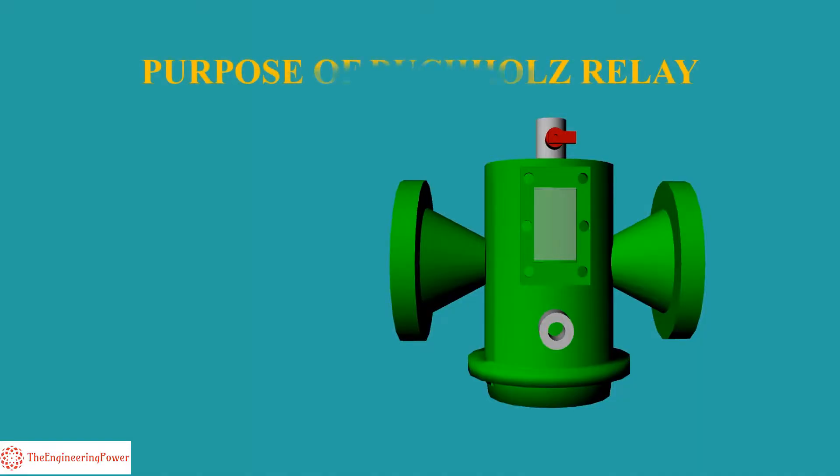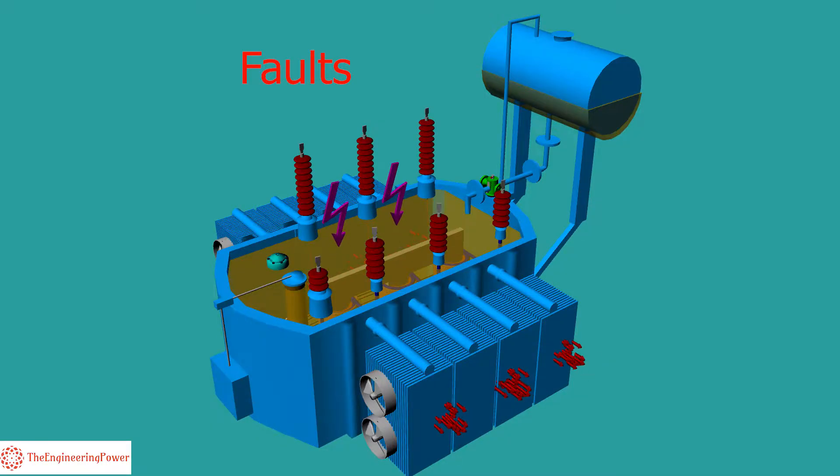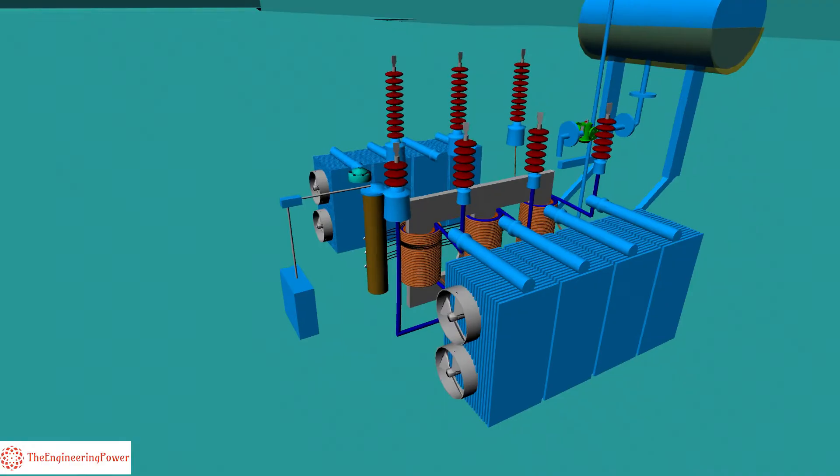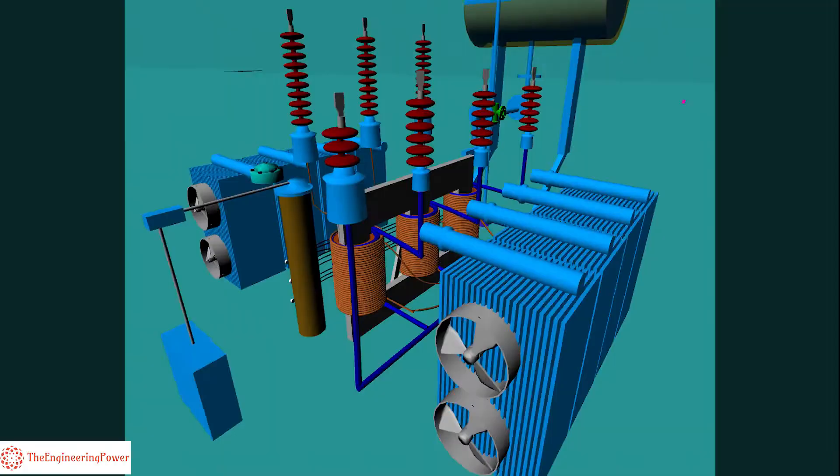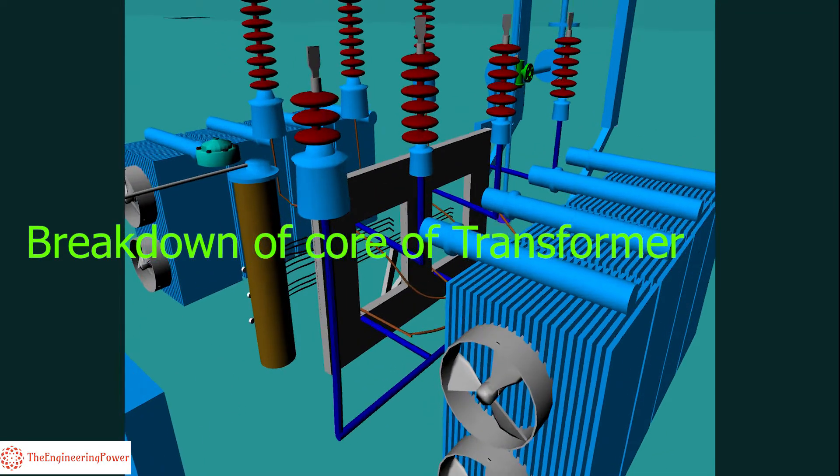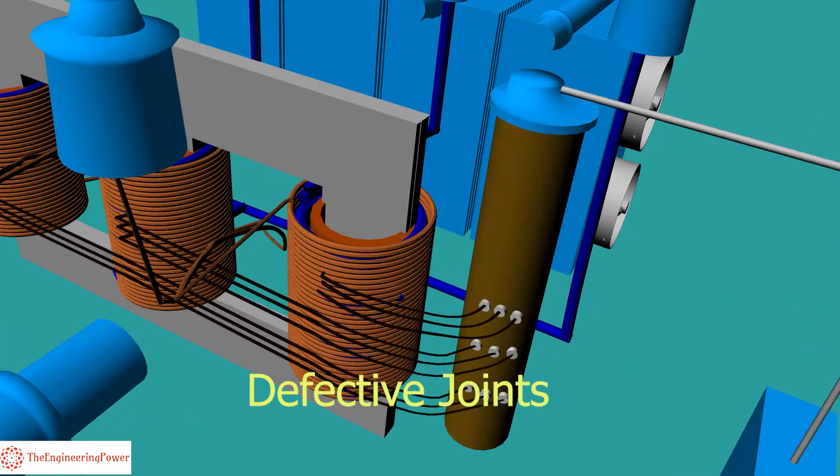So why is the Buchholz relay used in transformers? There must be some protective devices installed on a transformer that prevent faults occurring inside the transformer. These faults include insulation failure between turns, breakdown of core of transformer, core heating, defective joints, etc.